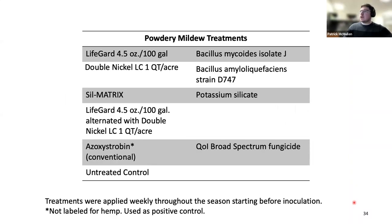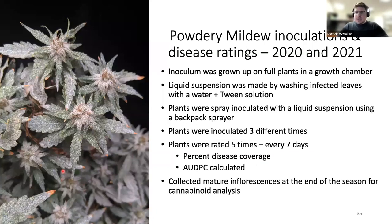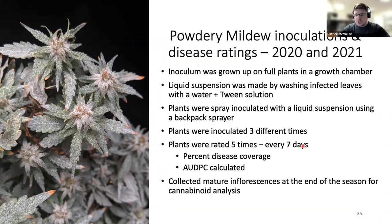The products tested included two biological products — Lifeguard and Double Nickel — a potassium silicate product called Cell Matrix, and a treatment alternating between Lifeguard and Double Nickel. We used azoxystrobin as a conventional positive control, though it's not currently labeled for hemp — used only in a research context. Studies were carried out in 2020 and 2021. Since powdery mildew is an obligate biotroph, inoculum was grown on living plants in growth chambers, then washed off and spray-inoculated in the field three times. Disease severity was rated five times weekly, and AUDPC — area under the disease progress curve — was calculated.